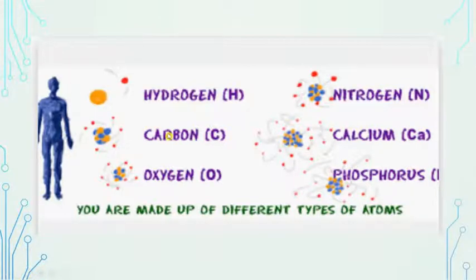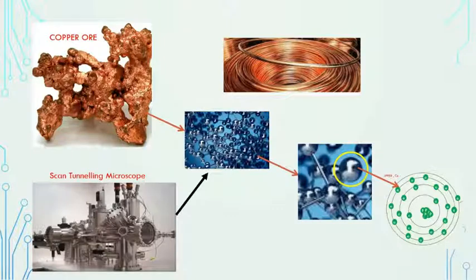We also have calcium, phosphorus, so like that we are made up with a lot of atoms. Atom is very basic. It was defined by Niels Bohr, so let's get into the atom basic concept.